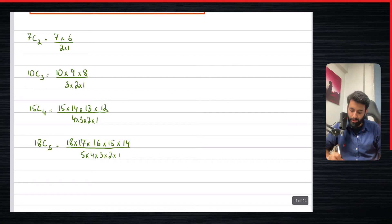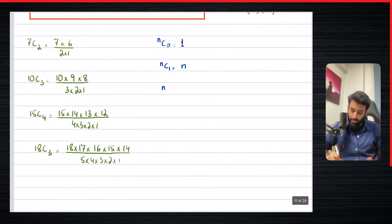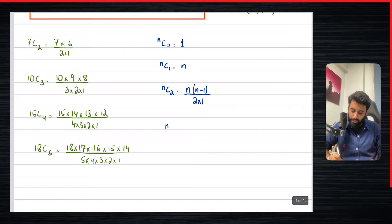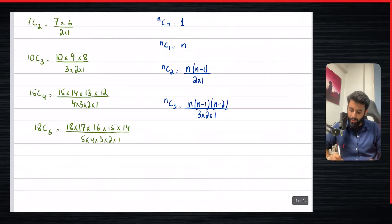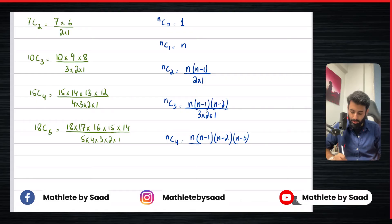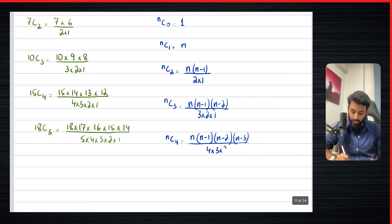Now that you've learned how to do it with numbers, let's see what it looks like when we do it with N. NC0 equals 1; NC1 equals N. NC2 is N × (N−1) divided by 2 × 1. NC3 is N × (N−1) × (N−2) divided by 3 × 2 × 1. And NC4 is N × (N−1) × (N−2) × (N−3) — that's a total of four terms — divided by four factorial, which means 4 × 3 × 2 × 1. And there you go — that's what NC4 looks like.